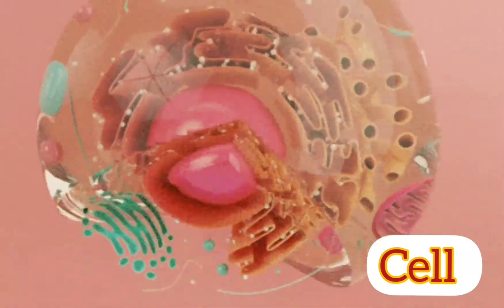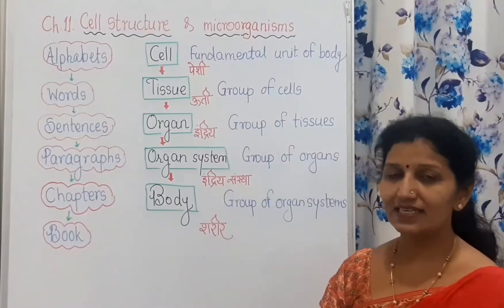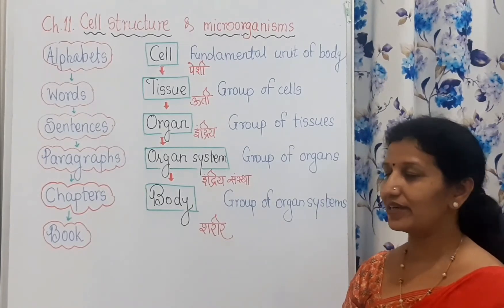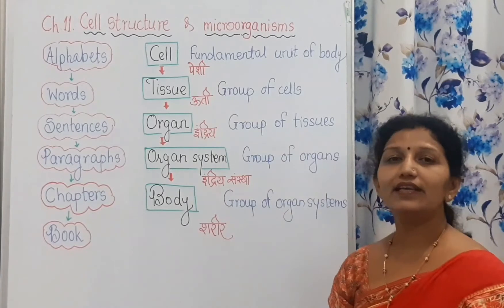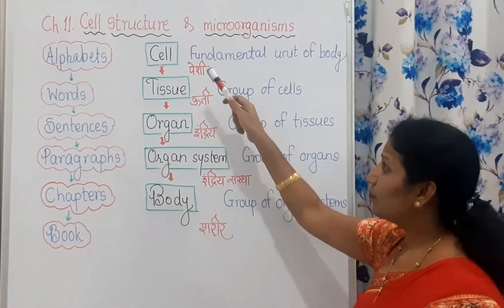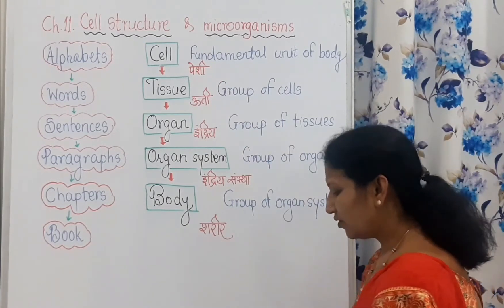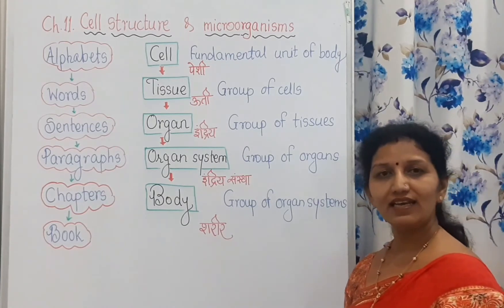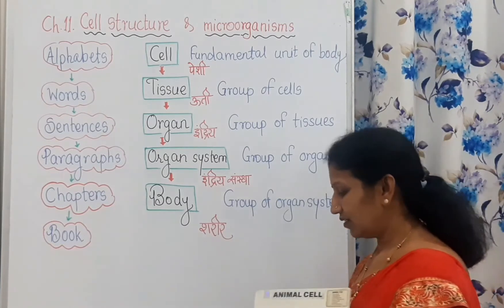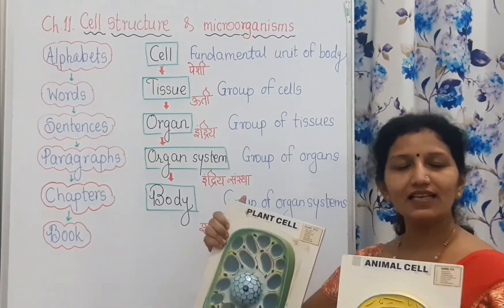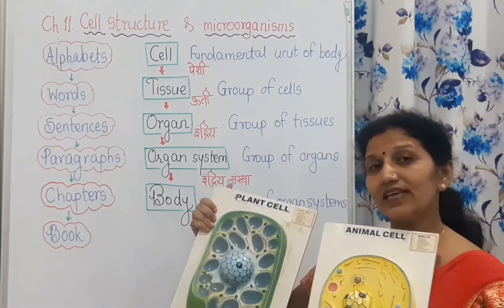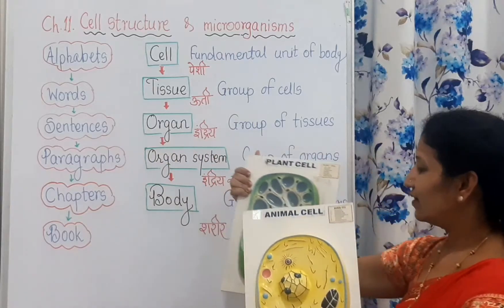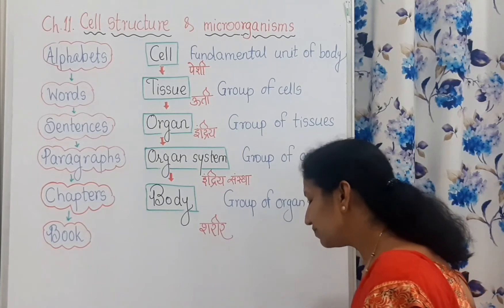Like that, our body also has some organizational levels. The structural and functional unit is the cell — in Marathi it is called Peshi. Living things are classified into two groups: plants and animals. This is a plant cell and this is an animal cell. Cell is the structural and functional unit. From a group of cells, a tissue is formed.